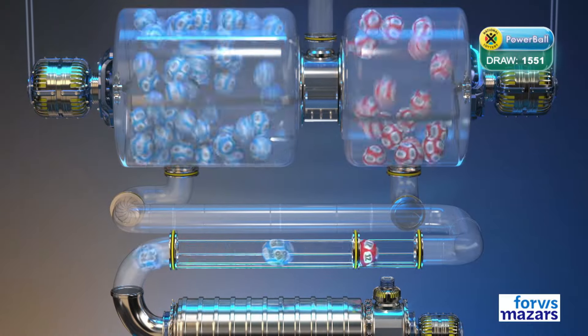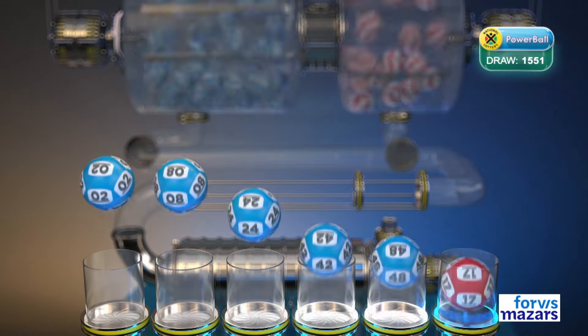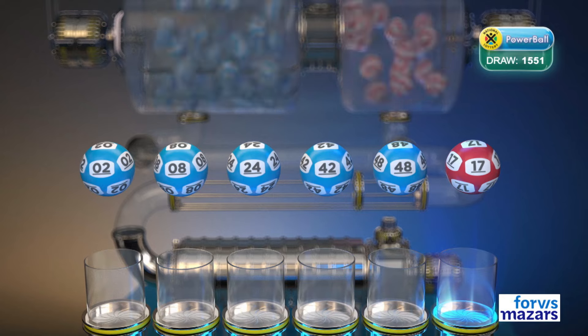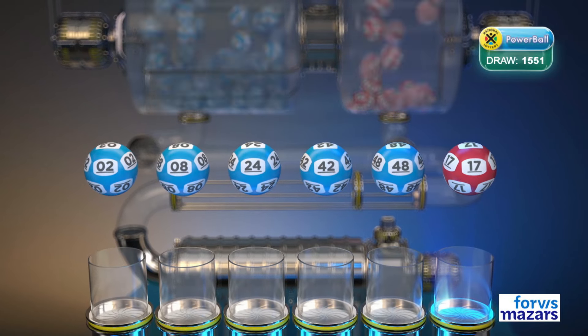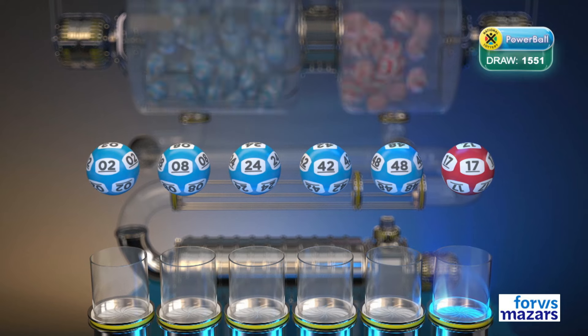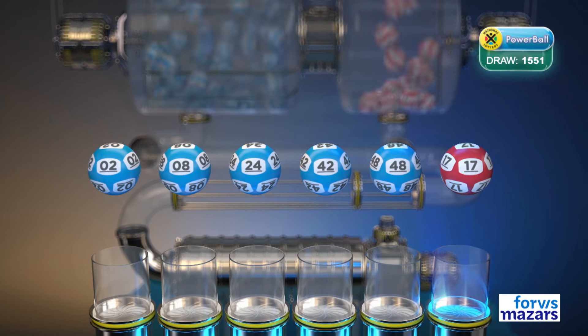Let's recap these numbers in numerical order. Two, Eight, Twenty-four, Forty-two, Forty-eight. And the Powerball is 17.